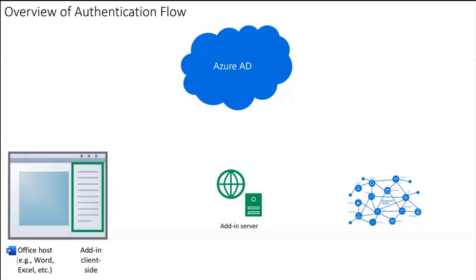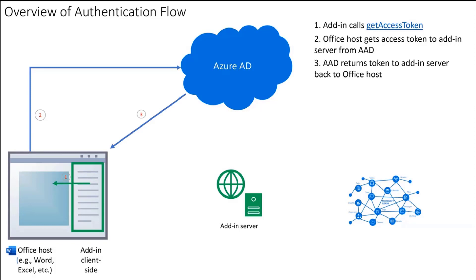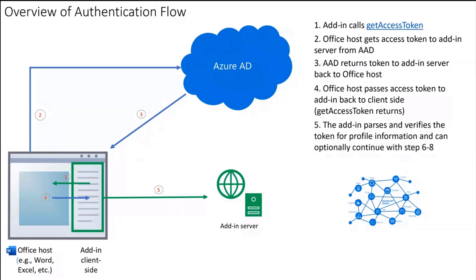Let me talk a little bit about how the flow works. You have an add-in on the client side, and that creates a request to get access tokens — this is the call saying 'I want to know who this user is.' That calls out to Azure AD; the Office host is calling Azure AD to get a token for the add-in server. It returns and moves forward back to the client side — that's step three. We get back a token to your add-in server, to the Office host, which comes back to the client. Now you have the user's identity.